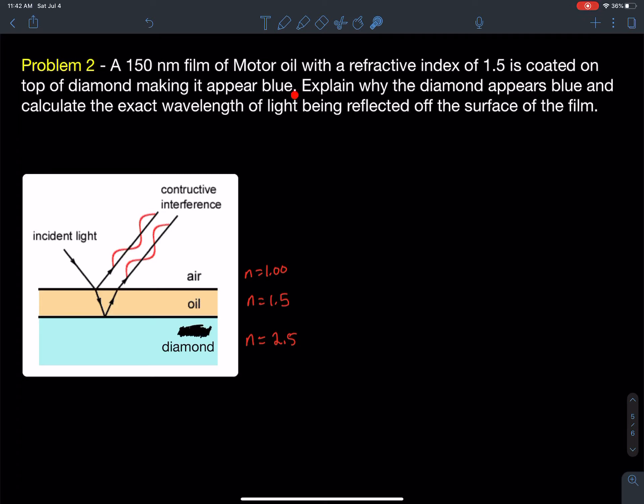You've probably seen jewelry or plastic jewelry that has a very thin film on it that if you scratch it, it changes its color. That's how they do it. Explain why the diamond appears blue and calculate the exact wavelength of light being reflected off the surface of the film.